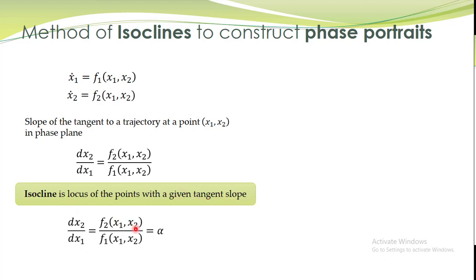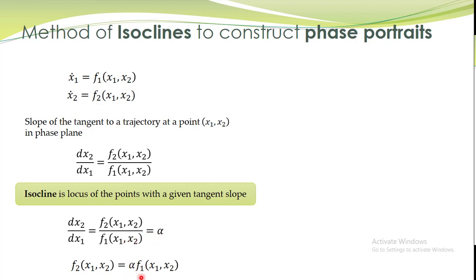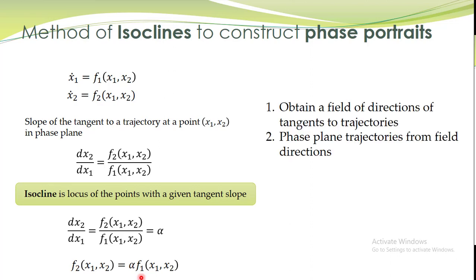dx2/dx1 is given by f2 divided by f1. An isocline is the locus of points with a given tangent slope. That is, in the phase plane, there will be certain points on which the trajectories will have the same slope, and the set of those points is the isocline. For example, for slope equal to alpha, all points in the x1-x2 plane on which trajectories have tangent slope equal to alpha are called isoclines.